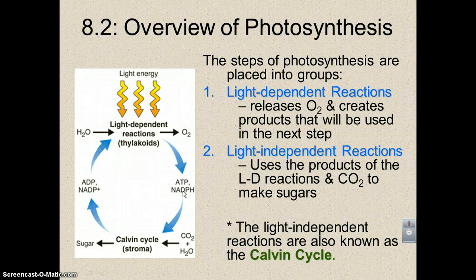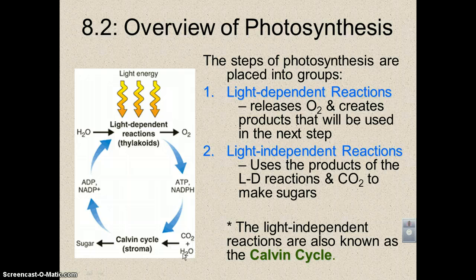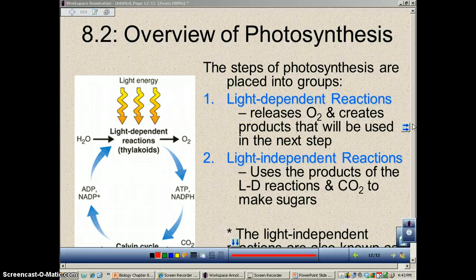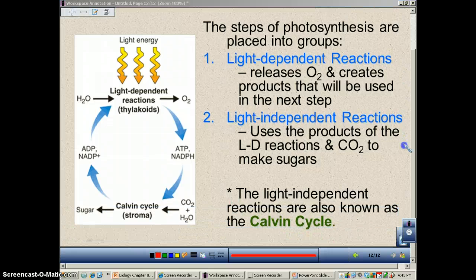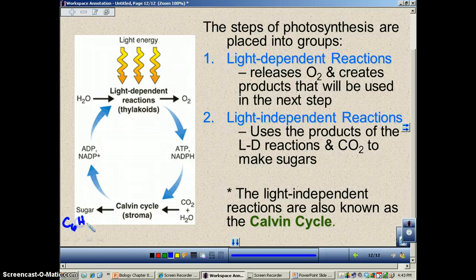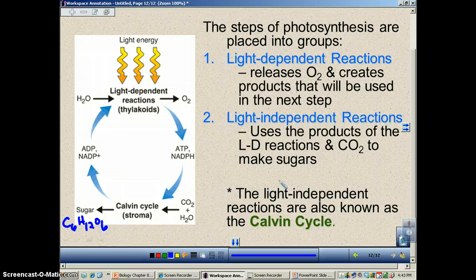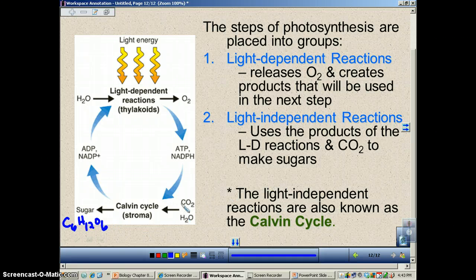The ATP and NADPH are going to supply the energy to rearrange these molecules into sugar. The formula for sugar is C6H12O6 — a carbohydrate. There are your carbons, your oxygens, and your hydrogens. So the ATP and NADPH are going to supply the energy to rearrange this stuff into glucose.